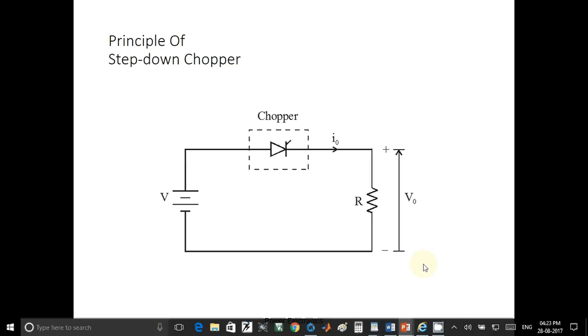Principle of step down chopper. This is the circuit diagram for step down chopper. Instead of using thyristor or SCR, we can also use MOSFET or IGBT as switching device. MOSFETs have good response for high frequency. IGBTs are used up to 1 kHz. MOSFETs are used up to 10 kHz.